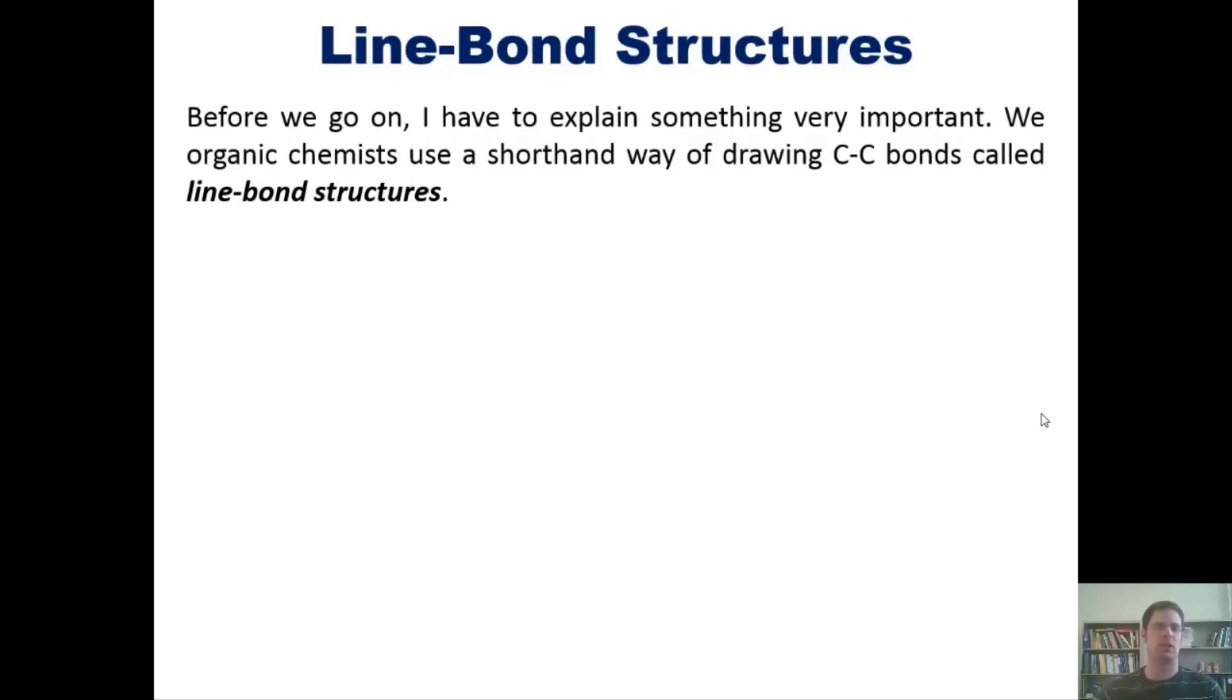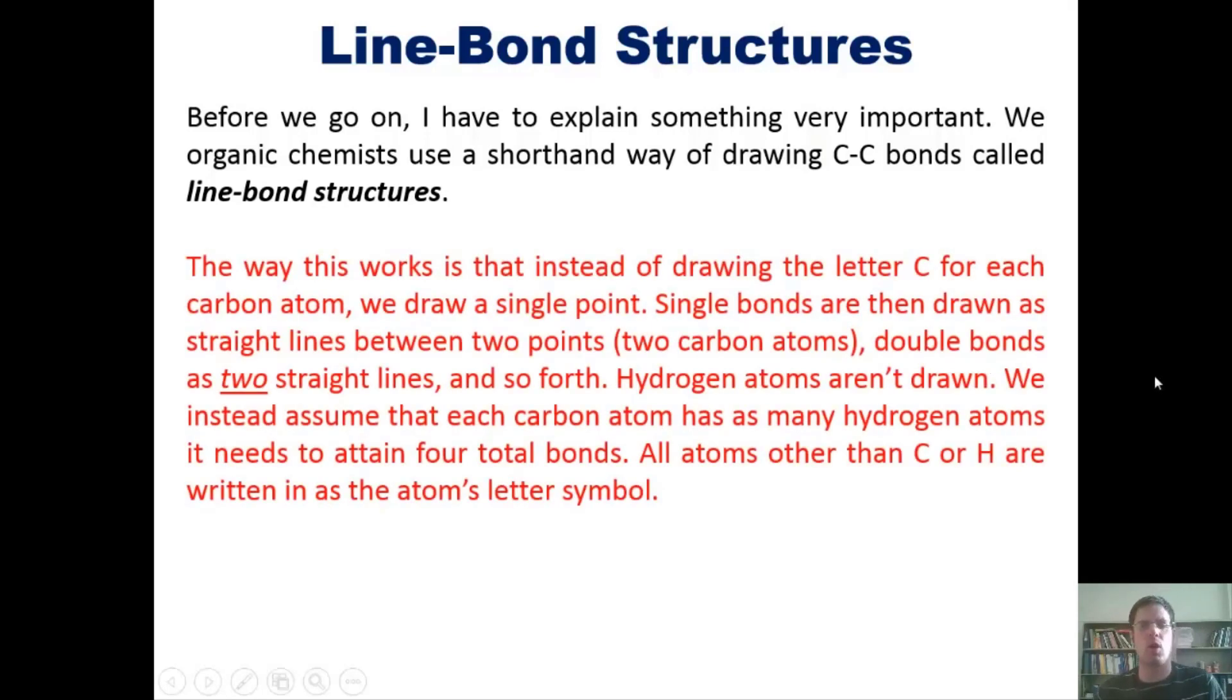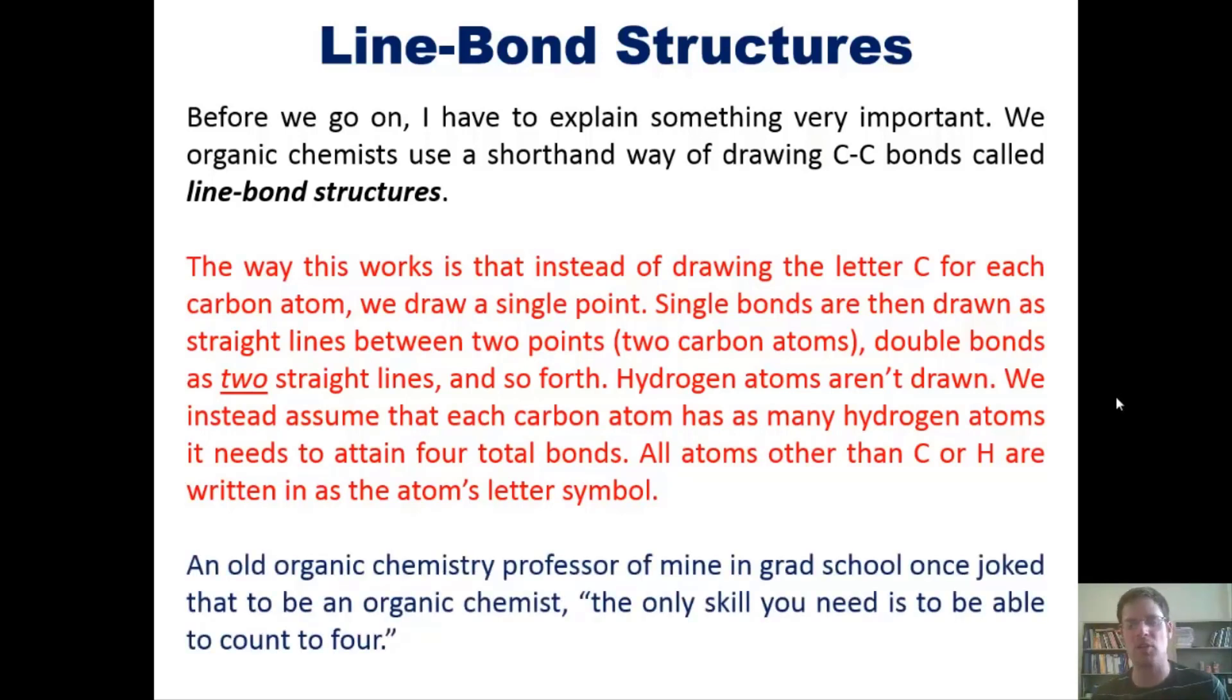One last subject for this video: line bond structures. We organic chemists use a shorthand way of drawing carbon-carbon bonds called line bond structures. Instead of drawing the letter C for each carbon, we draw a single point. Single bonds are straight lines between points; double bonds are two straight lines. Hydrogen atoms aren't drawn - we assume each carbon has as many hydrogens as needed to attain four total bonds. All atoms other than carbon or hydrogen are written as the atom's letter symbol.